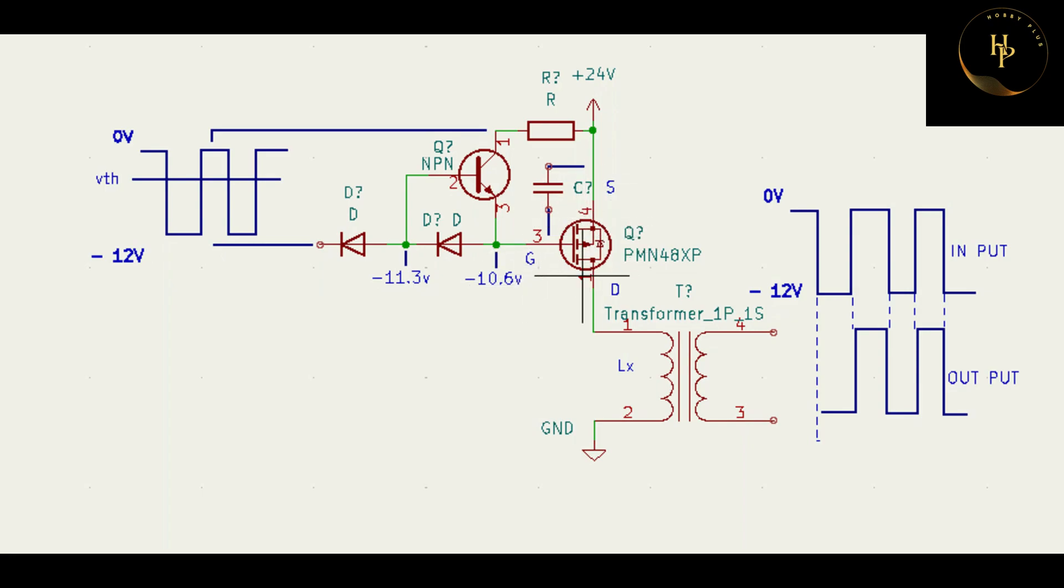Your transistor MOSFET is on. Power goes through MOSFET to transformer, then ground. When your pulse goes to zero, then this voltage drops, this voltage drops, this voltage drops to zero. But this voltage is still 10.6 volt, that is also minus. Why?